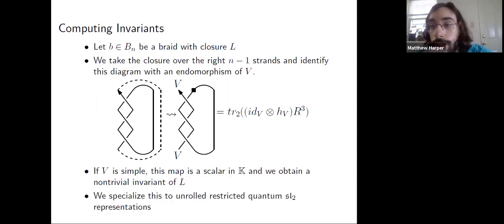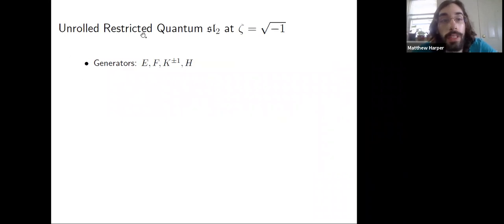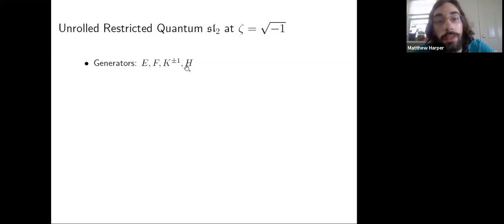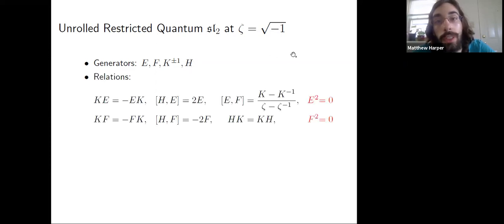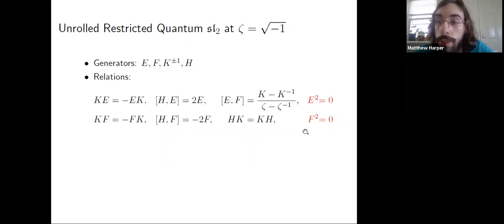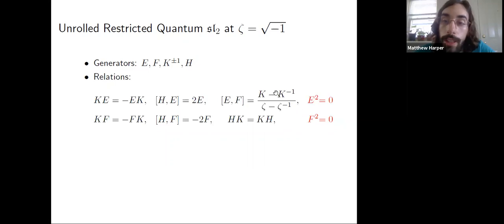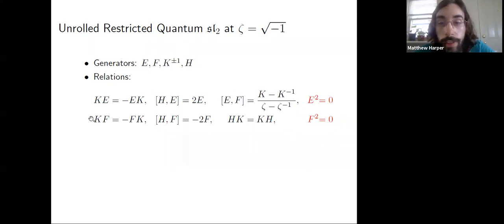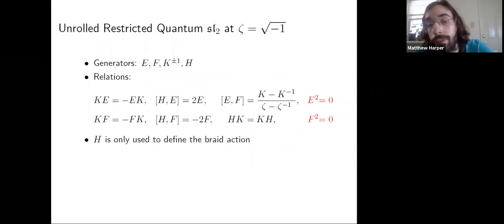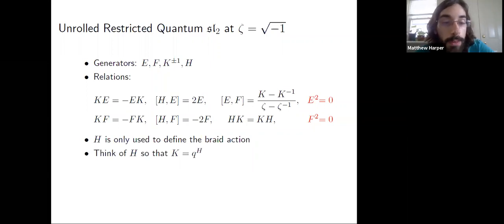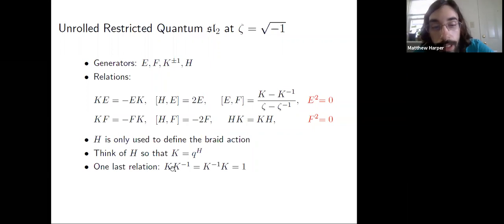Let's go through this thinking about the quantum SL2 representations. We're looking at the unrolled restricted quantum SL2, taking q equal to i, denoted zeta here. The unrolled piece refers to the fact that H is included. The restricted part comes from being at a root of unity and imposing a nilpotent condition — since we're at a fourth root of unity, the nilpotency gives us E squared equals F squared equals zero. The other relations are the standard quantum group relations. H is useful mainly for defining the braiding; we think of H as a logarithm of K, and of course K times K-inverse equals one.